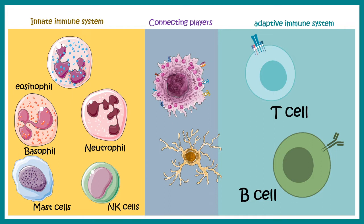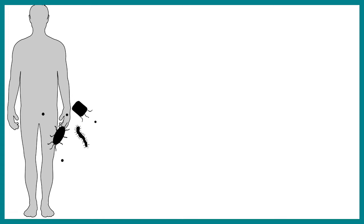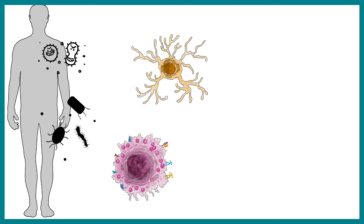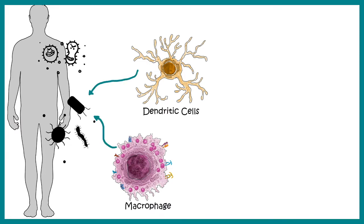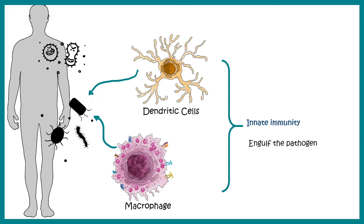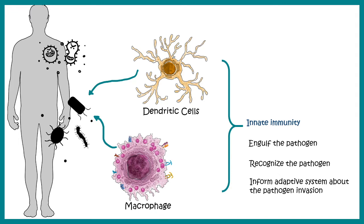The dendritic cell plays a special role in connecting these two systems, as we'll appreciate in this video. The adaptive immune system acts as a second line of defense against pathogens such as viruses and bacteria. Within hours to one day of invasion, dendritic cells and macrophages engulf the pathogens, recognize them, and then relay that information — or intel — to the adaptive immune system.